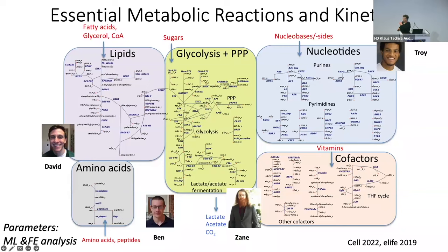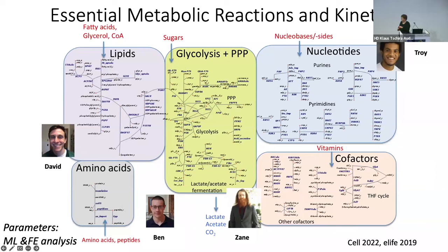The map itself had been made already back in 2019 — all the citations at the bottom show the papers we wrote when we went after each of the subcellular networks. The map was done by Marianne Breuer, who's now a professor in the Netherlands. Then everybody else got their own system, and we had to come up with the kinetic parameters. We used machine learning there.